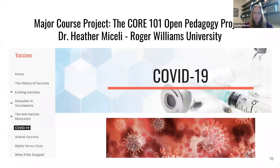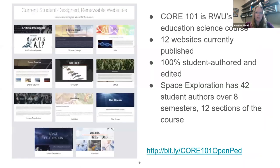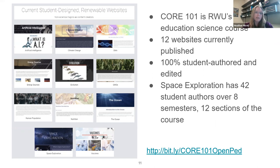I decided that instead of having my students write papers solely for me, what if they created a textbook written by non-majors for non-majors? What ultimately came out of it is a series of websites. There are currently 12 websites published, all focused on society-relevant topics in science, such as climate change and vaccines. Each semester, students review the website as it currently exists, identifying areas where content needs to be added or updated and areas that need major revision. Each website is in a different level of development. For example, our space exploration page has had 42 student authors over eight semesters and has been put into semi-retired status.